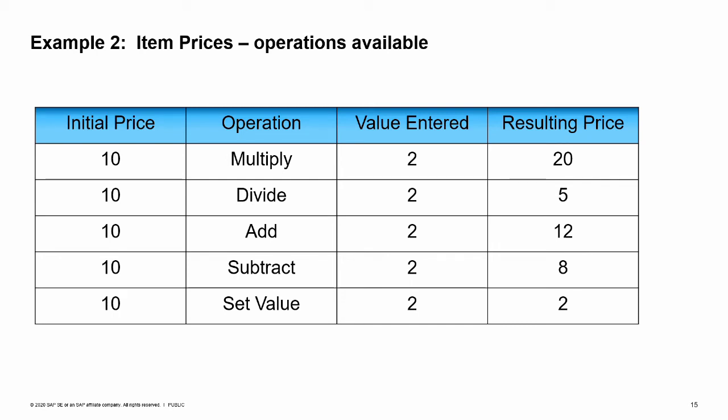Let's assume we have an item currently priced at 10, and let's see how the options work if we are entering the value of 2. If we choose multiply and enter 2, the resulting price is 20. If we choose divide, 10 is divided by 2 and the resulting price is 5. If we choose add, the system adds 2 and results in a price of 12. If we choose subtract, the system subtracts 2 and results in a price of 8. If we choose the set value operation, then it doesn't matter what the initial value was — the value entered is used as the resulting price.